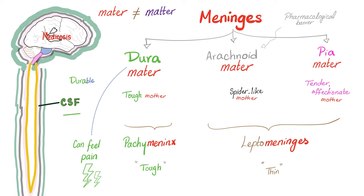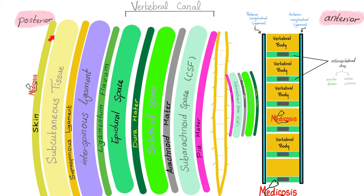Epidural anesthesia is placed outside of the dura. Spinal anesthesia is placed in the subarachnoid space, between the arachnoid and the pia. The arachnoid mater is a pharmacological barrier, so the epidural anesthetic will not reach the subarachnoid space — unless you penetrate the dura and arachnoid by mistake.